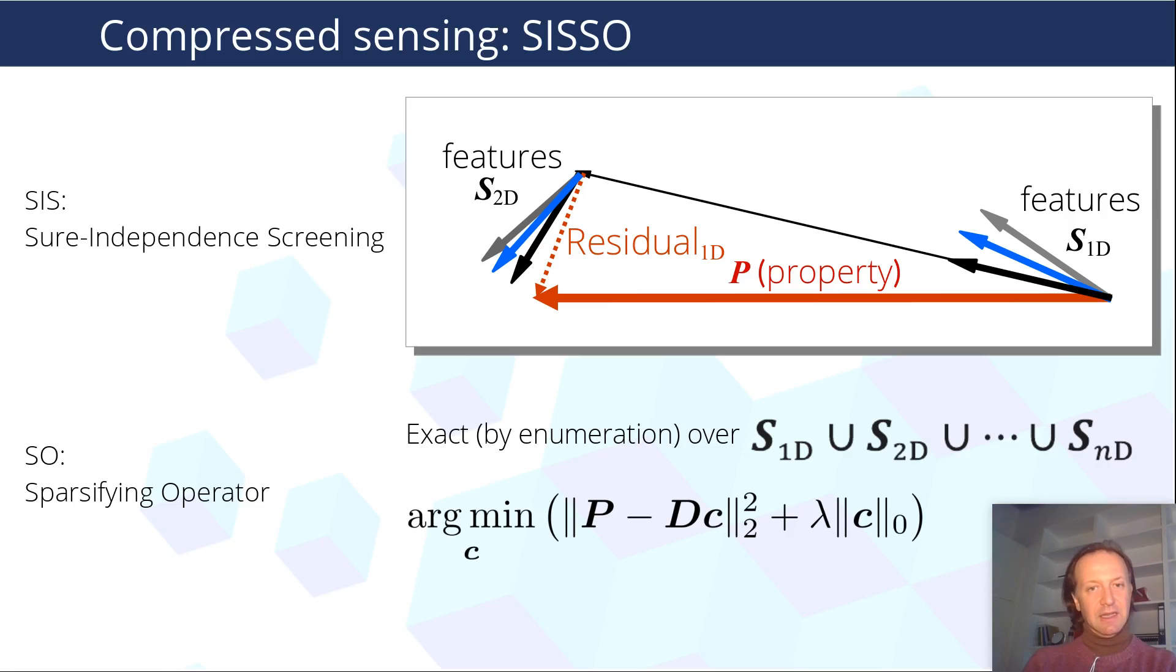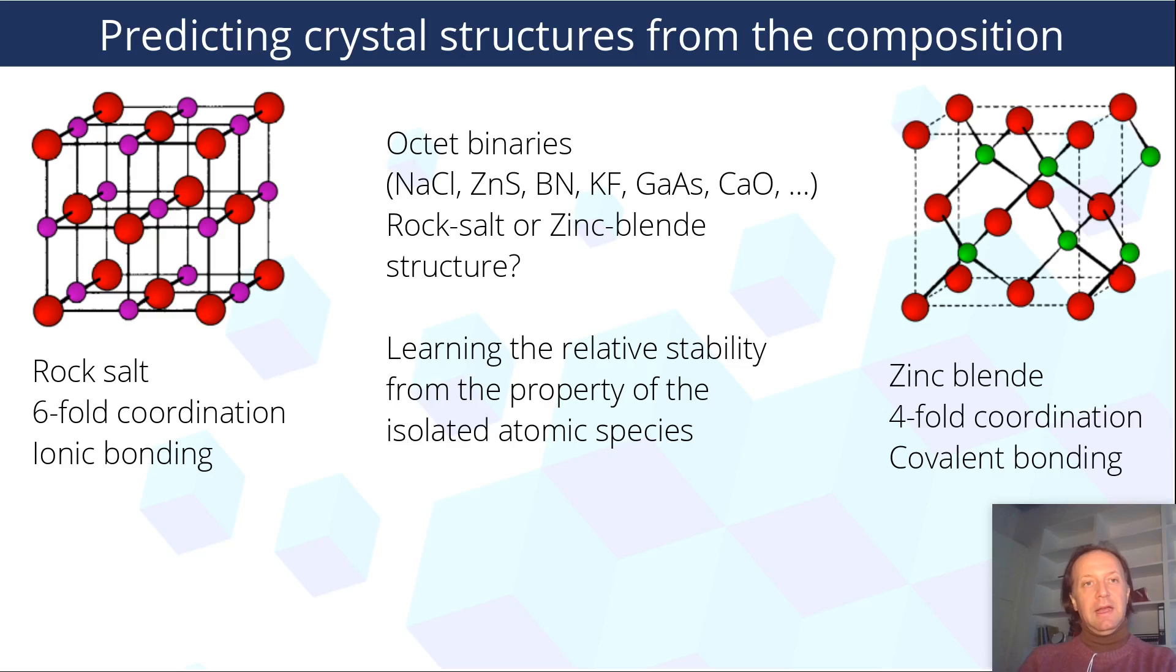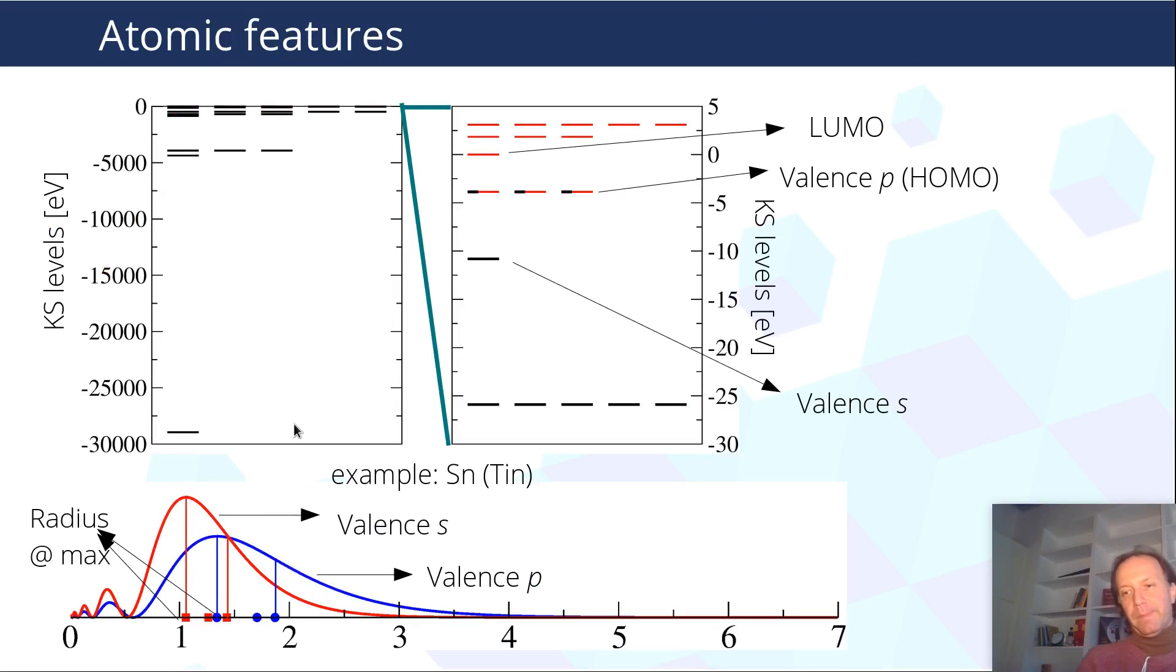The tutorial is about predicting the crystal structure of these octet binary compounds that crystallize mainly as rock salt and zinc blend. These are the two structures and the idea is to find a symbolic expression that correlates